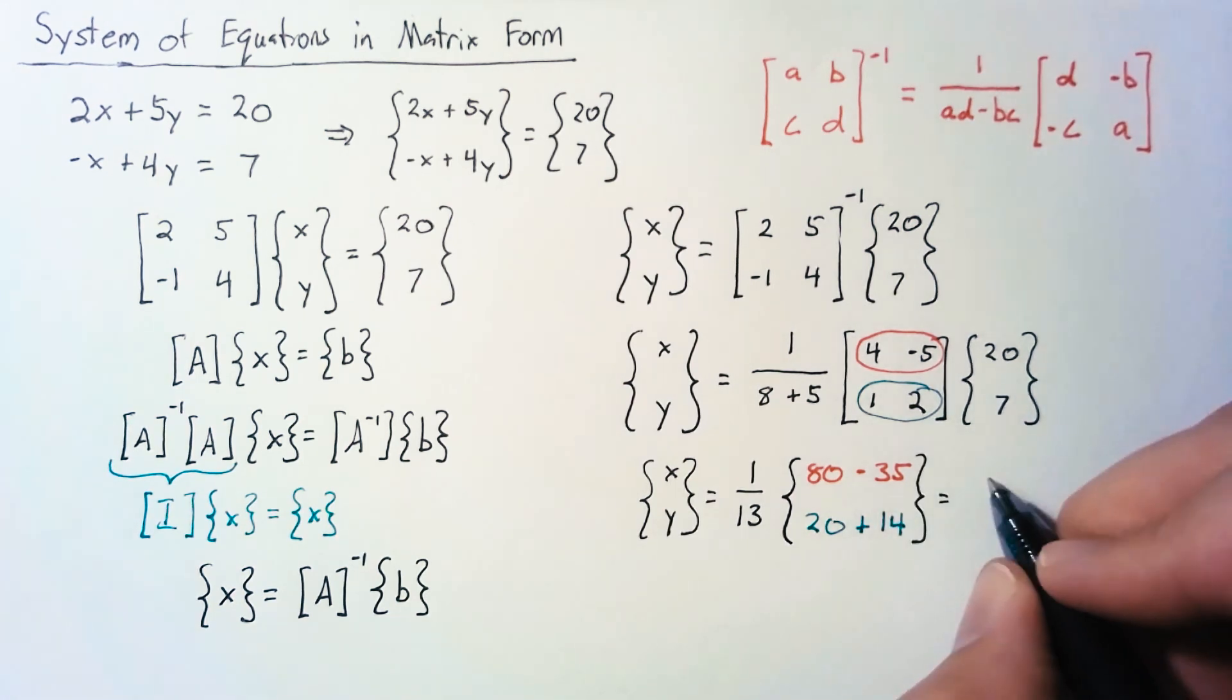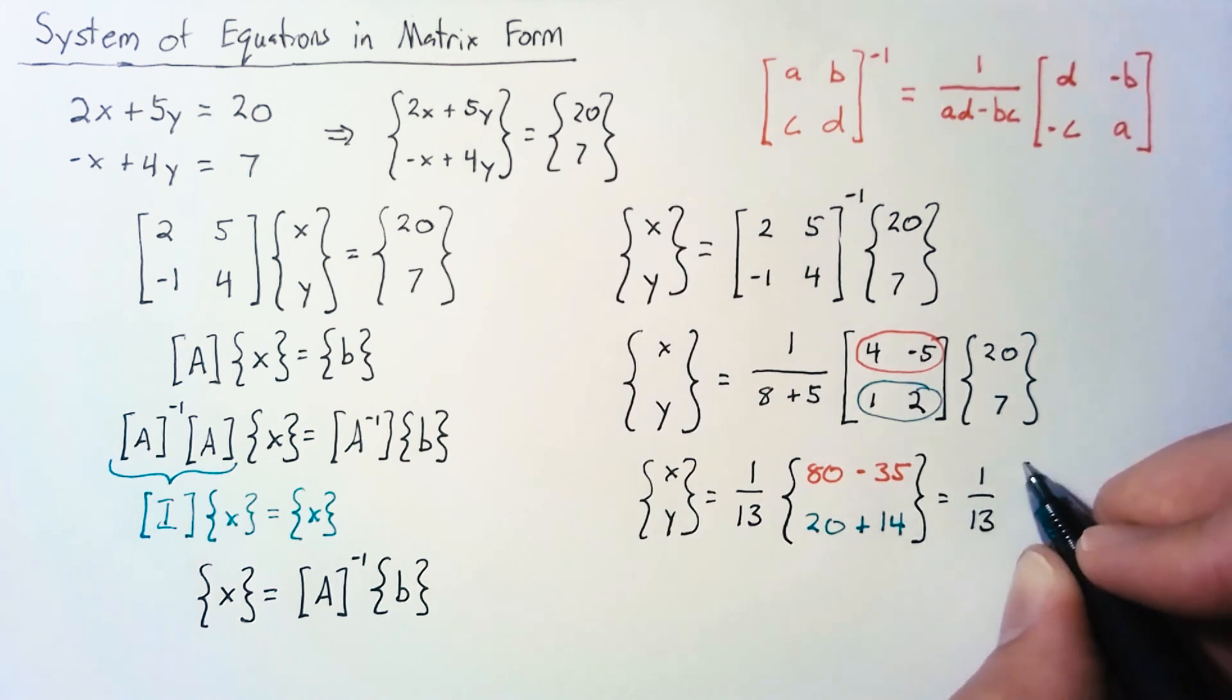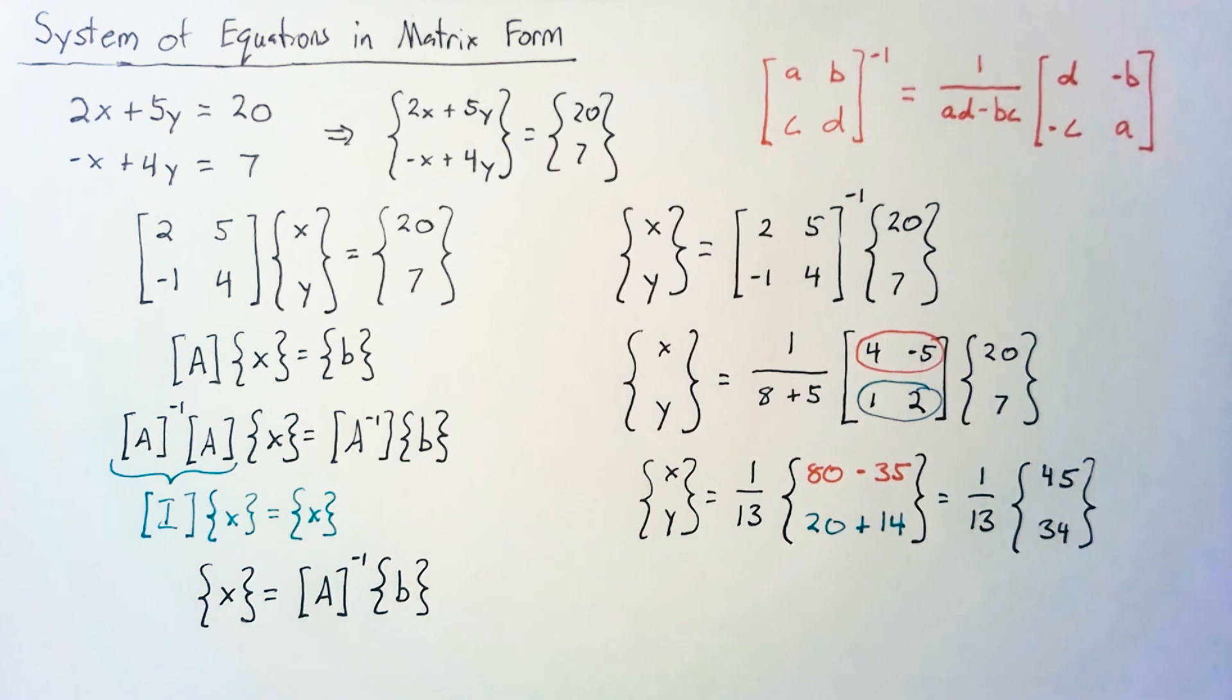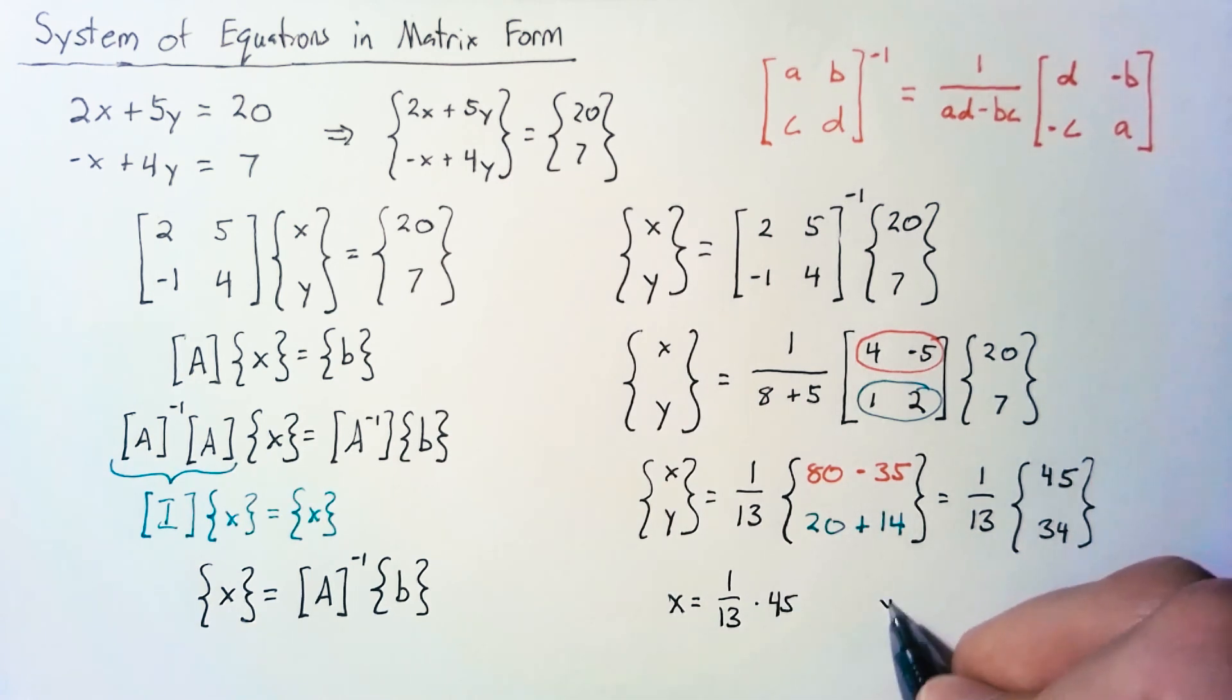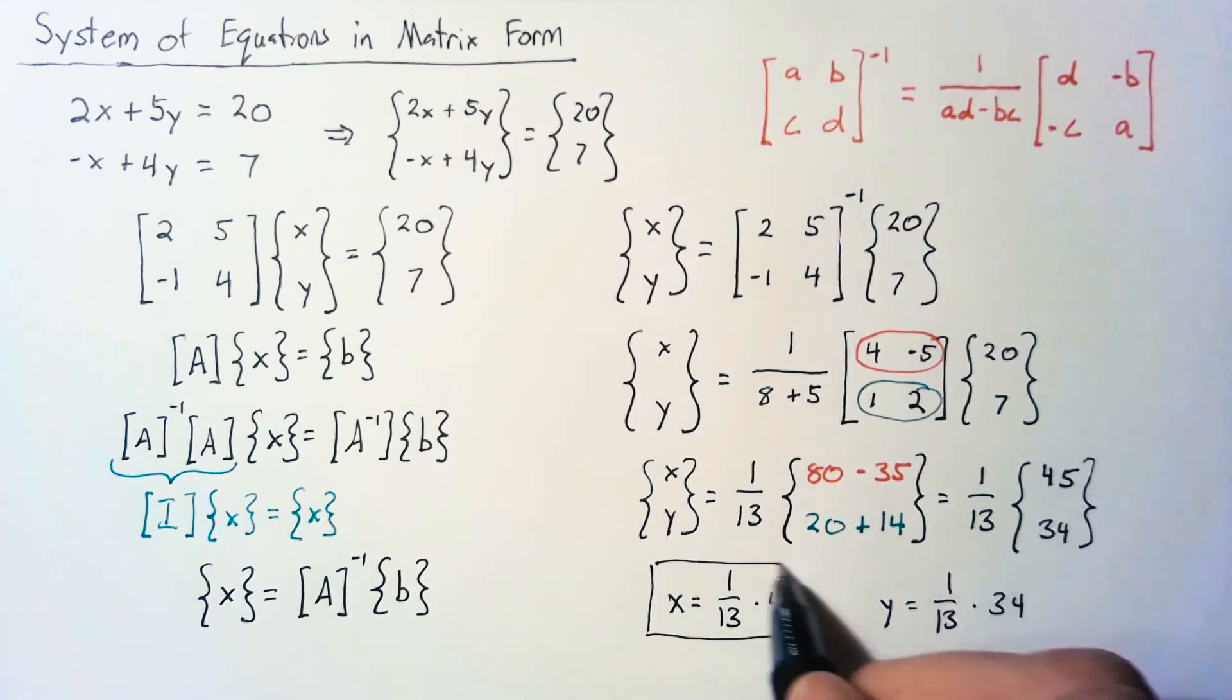Putting that all together, we end up with 1 over 13 multiplied by 45 and 34. And the way we interpret this is we say that x is equal to 1/13 times 45 and y is equal to 1/13 times 34. And these are our final answers to the system of equations.